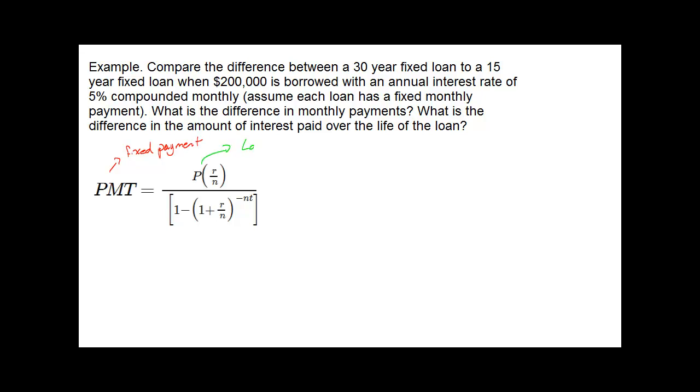P is the loan value, so for each scenario we're going to evaluate this formula. R is the annual rate, N is the compounding period, and T is for the years. Let's look at our 30-year fixed.